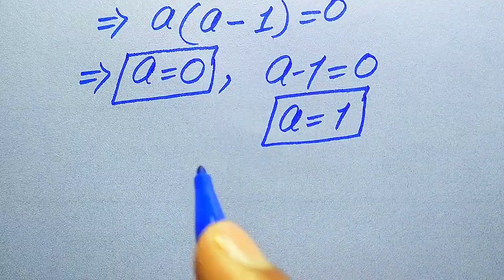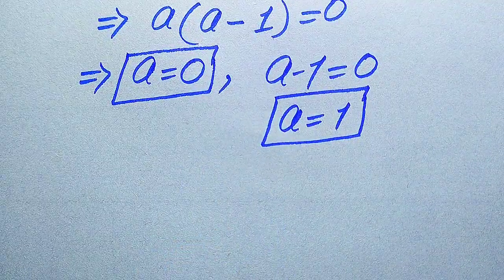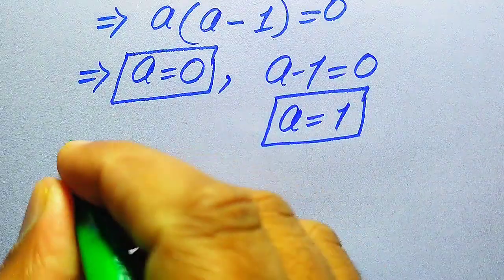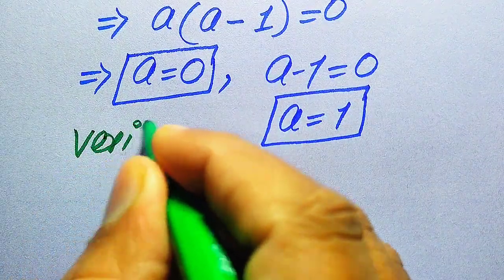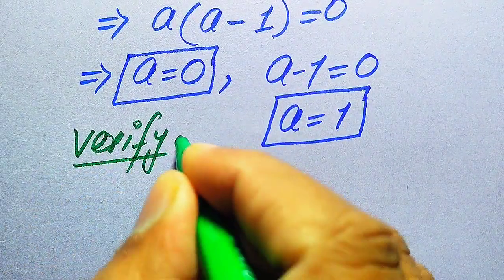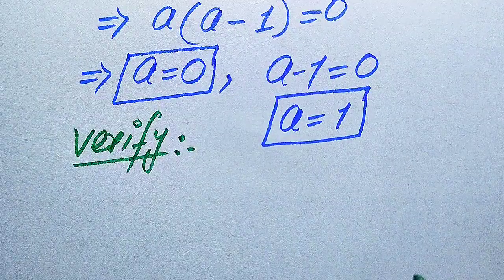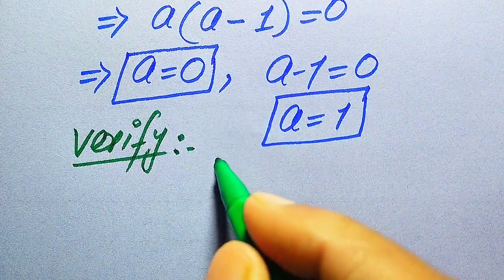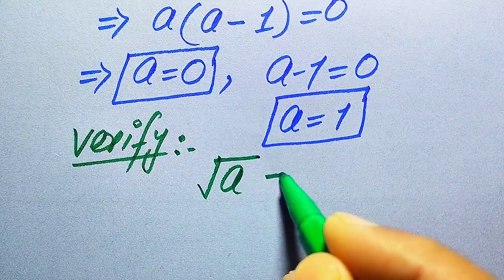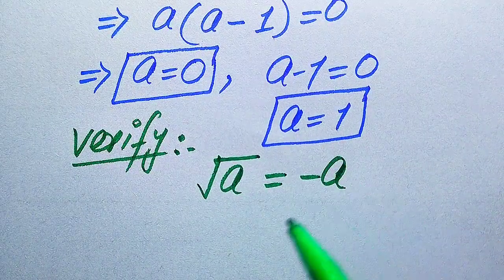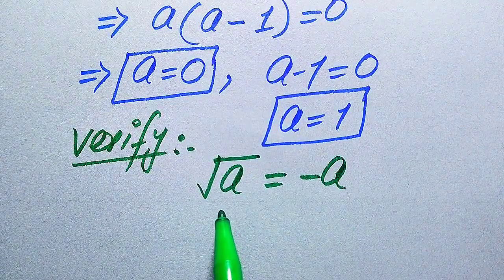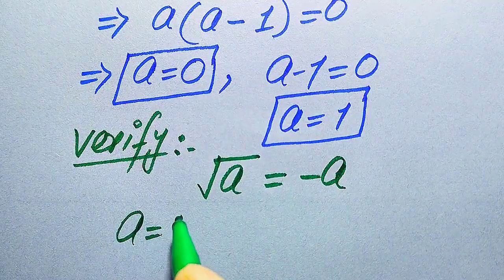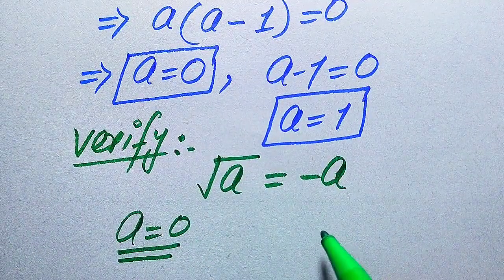In this method we obtained two roots of the given equation. In the next step we need to verify whether both of these two roots are solutions of this equation or extraneous roots. For verification, we copy down the given question statement: square root of A equals minus A, and we will verify A equals 0 and A equals 1.